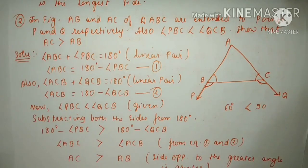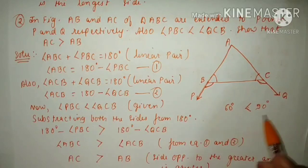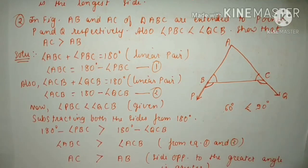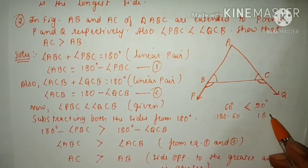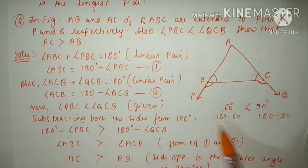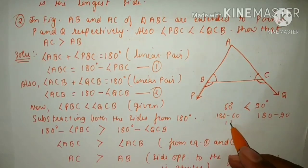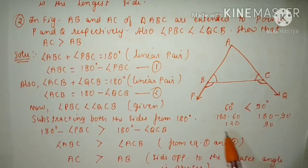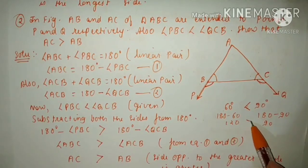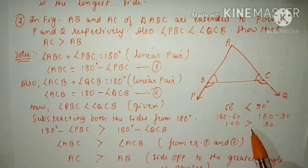Why does the sign change? Here is an example: 60 degrees is less than 90 degrees. If we subtract both sides from 180, we get 180 minus 60 and 180 minus 90, which gives 120 and 90. So 120 is greater than 90 — the sign has changed. In the same way, this inequality sign will also change.